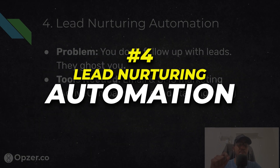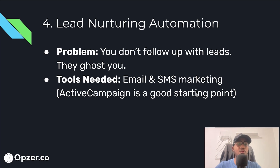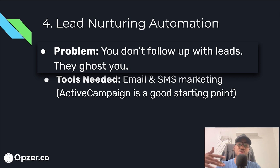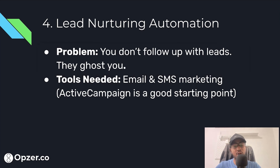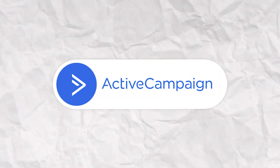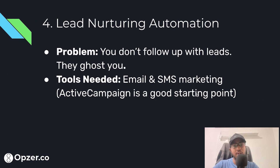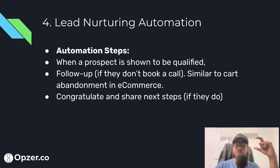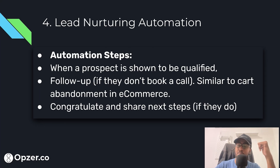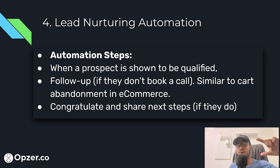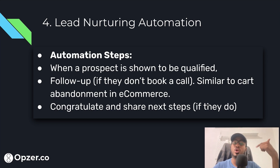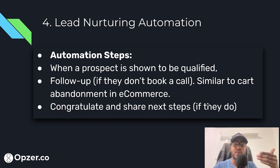Automation number four: lead nurturing. The problem is that if you don't follow up with leads, or if they ghost you, you spend a lot of time on manual follow-up. Tools like ActiveCampaign for email and text message marketing can help automate this. When a prospect is shown to be qualified but didn't book a call, you follow up automatically: 'We noticed you filled out our form and seem like a great fit, but you didn't book a call.' You can send multiple emails and text messages — similar to shopping cart abandonment emails.